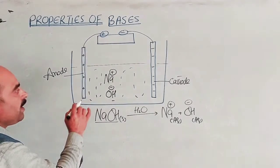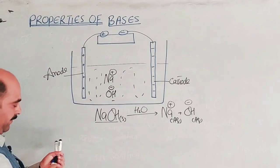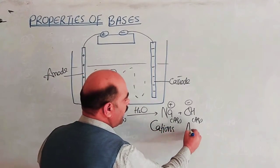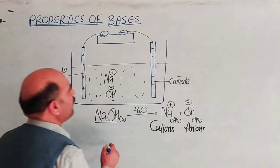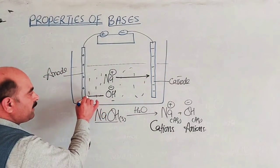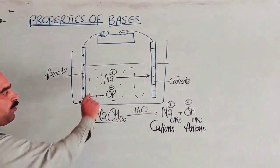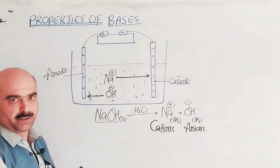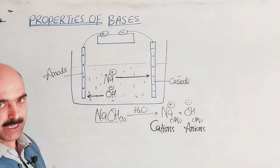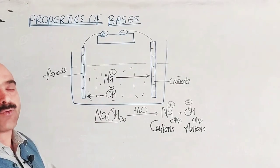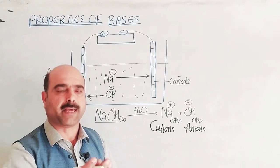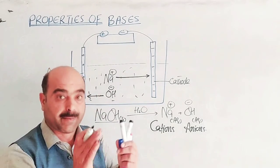When current is supplied to the solution, positive ions are called cations and negative ions are called anions. Cations move toward the cathode and anions move toward the anode. The movement of ions is the movement of charge, which constitutes electric current. Acid, base, or salt solutions all conduct electricity this way.